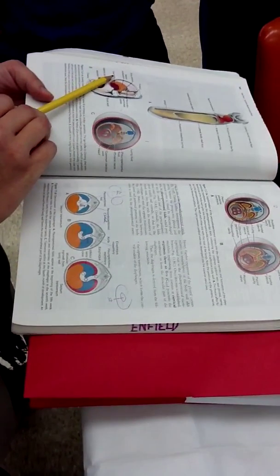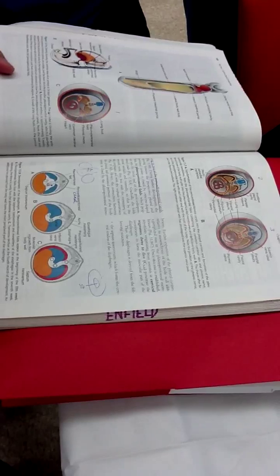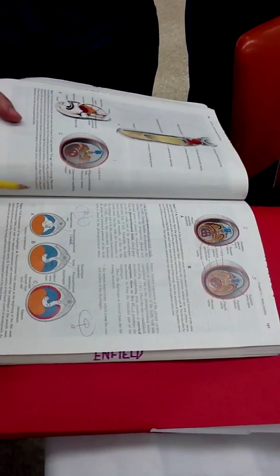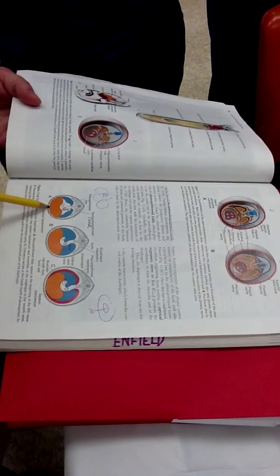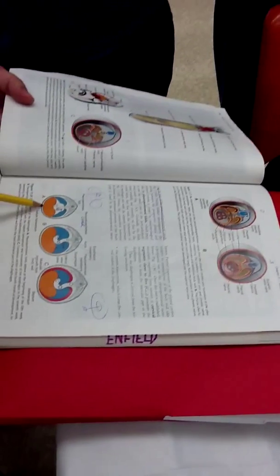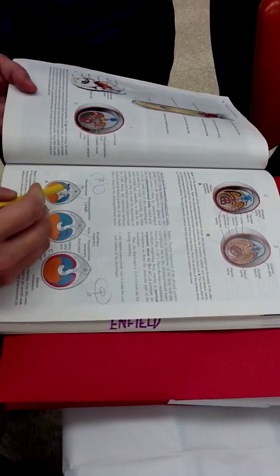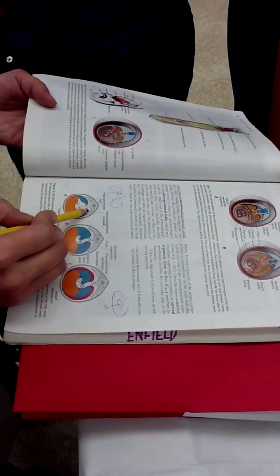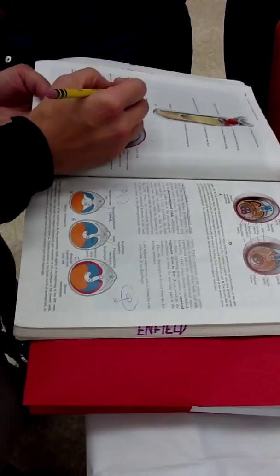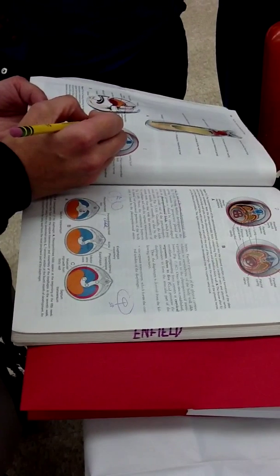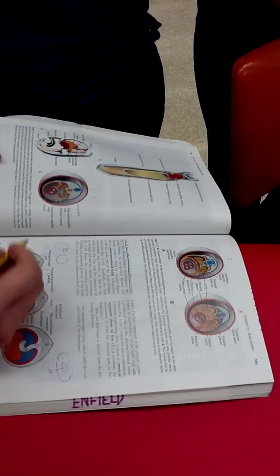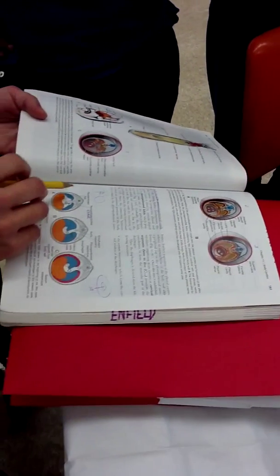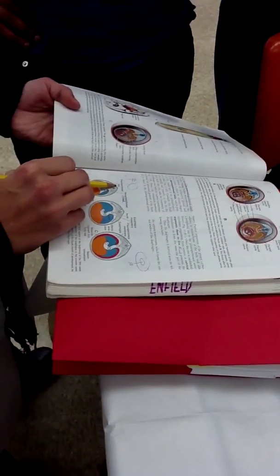So what happens when you have the septum transversum, it's going from the ventral. Yeah. This is ventral, this is dorsal, okay? So that septum transversum is going from the ventral wall, and it's going back, but it doesn't go all the way back. Okay. So there's this space, and that space is called the pericardial peritoneal canal. Okay. You can see it on either side of the foregut here. And so that space is going to be filled in by the pleural peritoneal fold.